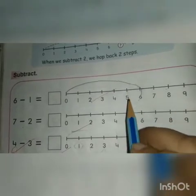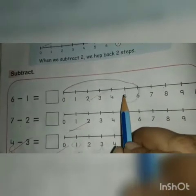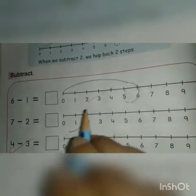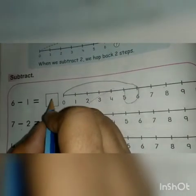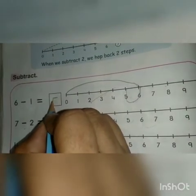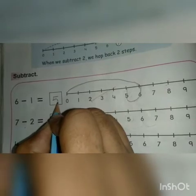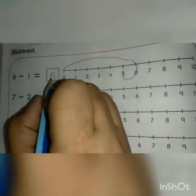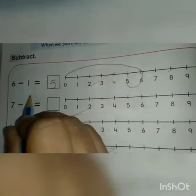Where will you stop? At number 5. Our answer is number 5. Now we will write number 5. 6 minus 1 is equal to 5.